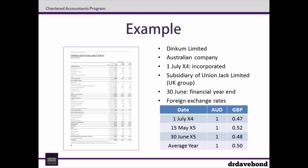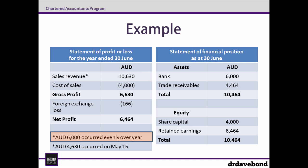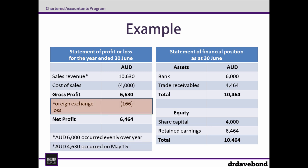So to do that we need some financial statements, which is what we have here. They're not overly complicated but I do want to point out a couple of things. First, the sales revenue has two components. Of the $10,630 in sales, $6,000 occurred evenly over the year whilst $4,630 occurred in one transaction on May 15. Second, the foreign exchange loss was determined on the 30th of June. Both of these will be important later on.